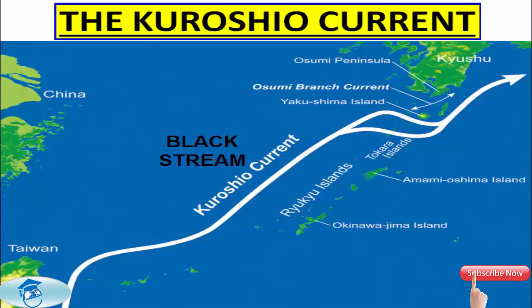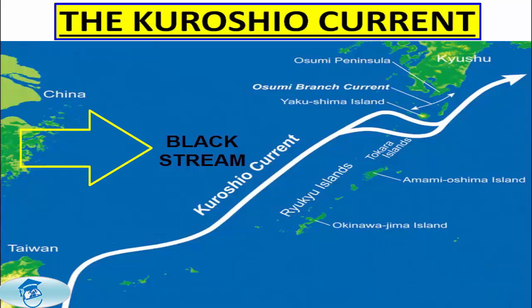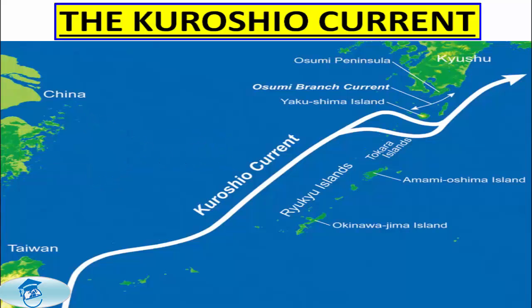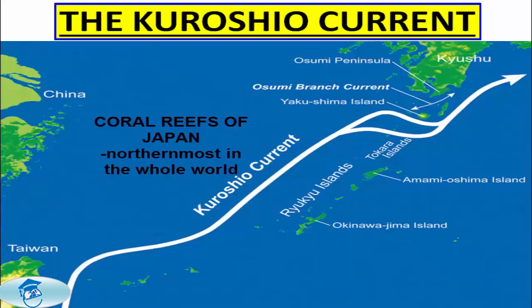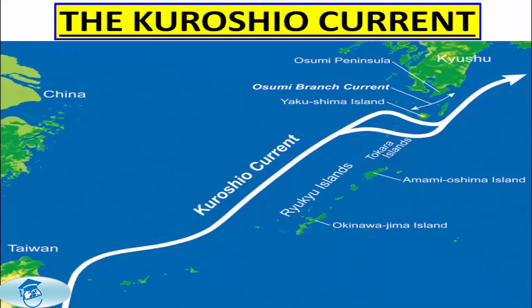The Kiroshio is also known as the Black Stream — an English translation of Kiroshio and an allusion to the deep blue of its water — and also as the Japan Current. Its counterparts are the North Pacific Current to the north, the California Current to the east, and the North Equatorial Current to the south. The warm waters of the Kiroshio Current sustain the coral reefs of Japan, the northernmost coral reefs in the world. The branch into the Sea of Japan is called the Tsushima Current, which brings rich fisheries from the East China Sea into the Sea of Japan.